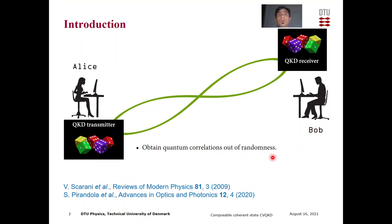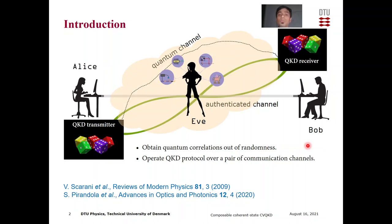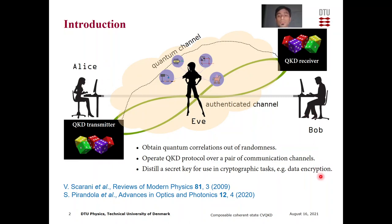Quantum key distribution or QKD is a method to obtain quantum correlations out of randomness. QKD users, typically called Alice and Bob, perform a sequence of steps which together form a QKD protocol. These are done over a pair of communication channels: the quantum channel and the authenticated channel. These channels are assumed to be in full control of an adversary Eve who also eavesdrops on the communication. Depending on the amount of her eavesdropping, Alice and Bob may be able to obtain a common bit string out of which a secret key can be distilled for use in cryptographic tasks such as data encryption.